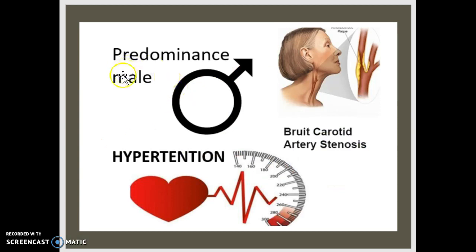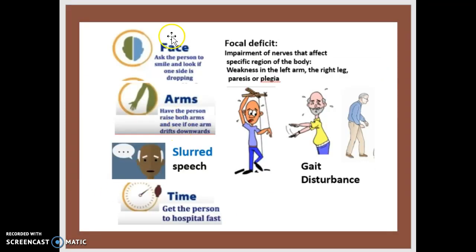There is a predominance in males, and it is associated with carotid artery stenosis and hypertension. When using the FAST acronym, you look at the person's face and ask them to smile. If one side is droopier than the other, you're most likely dealing with a stroke.